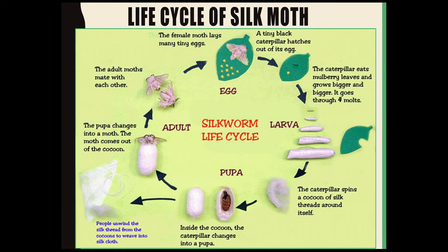First of all, the female silk moth lays 300 to 400 eggs at a time. The female dies almost immediately after depositing the eggs. The eggs hatch in about 10 days and the larva comes out. This larva is also called a caterpillar or silkworm. The larva which emerges will be feeding on large quantities of mulberry leaves for about three to four weeks.